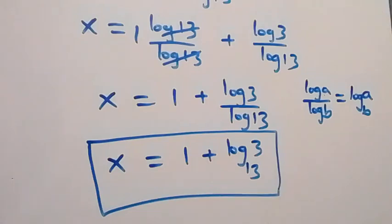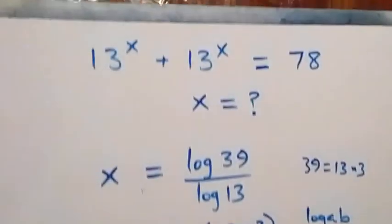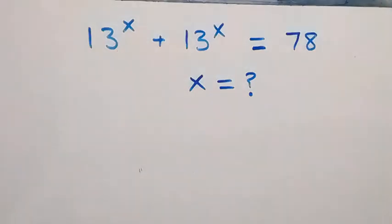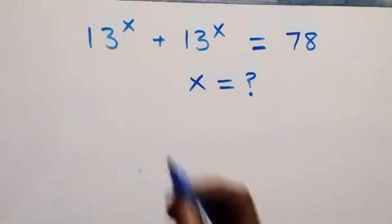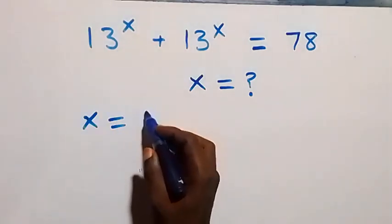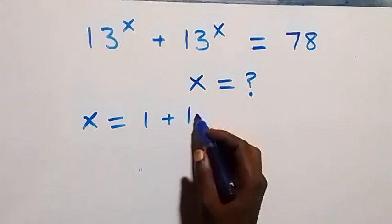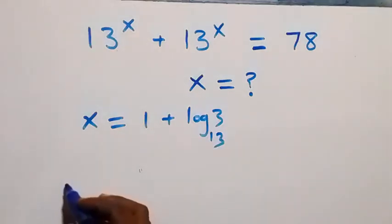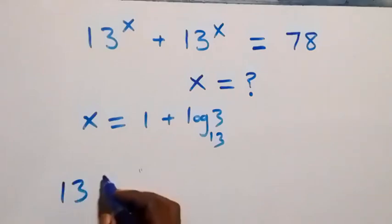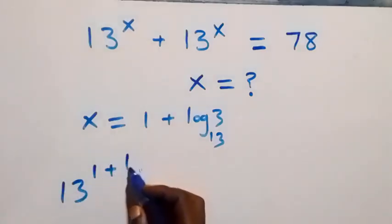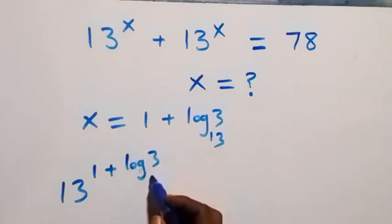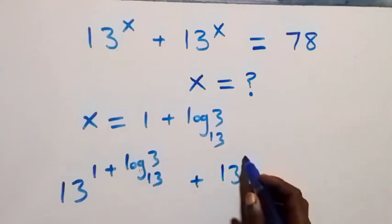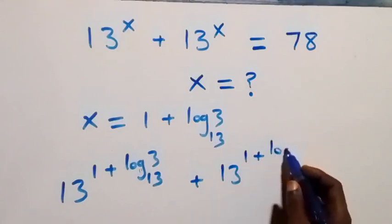Now let's verify this satisfies the given problem. We substitute the value of x, which is x equals 1 plus log 3 to base 13. We get 13 raised to power (1 plus log 3 to base 13), plus 13 raised to power (1 plus log 3 to base 13).